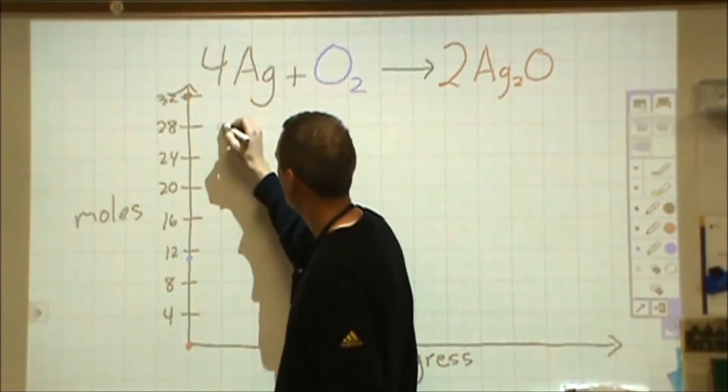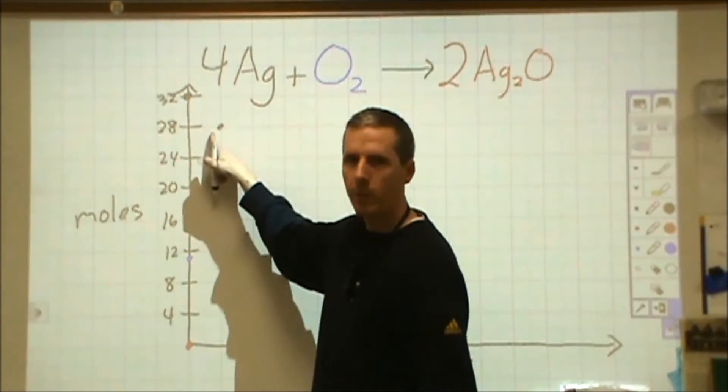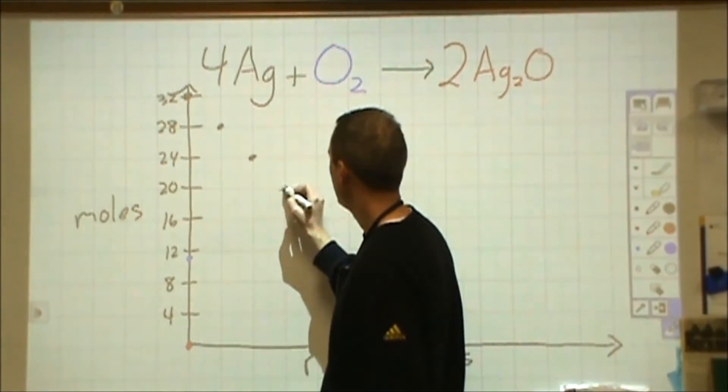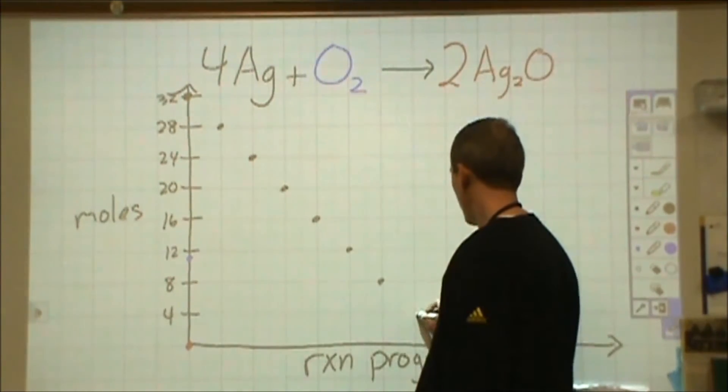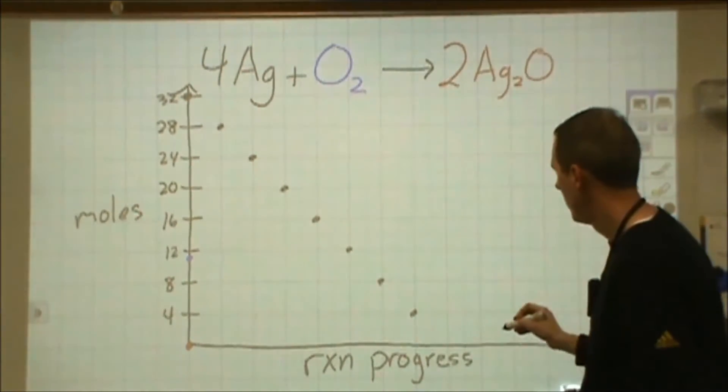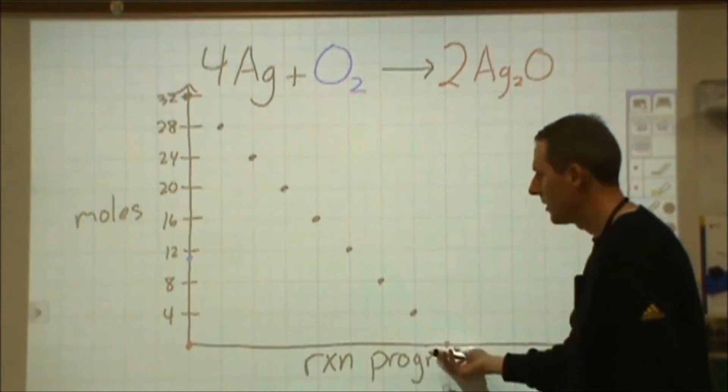So I'm starting with 32. So as I move over, I'm going to go down to 28 and then down to 24 and 20 and 16, 12, 8, 4, almost out of silver. And then eventually I run out at this particular time.